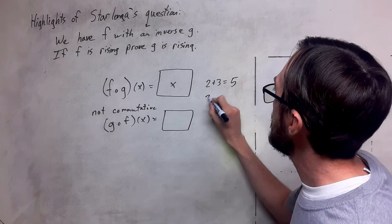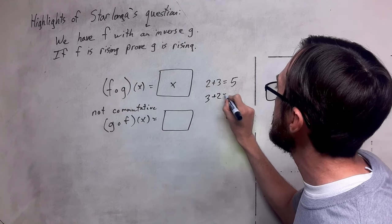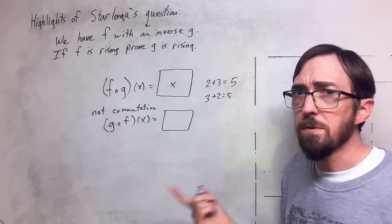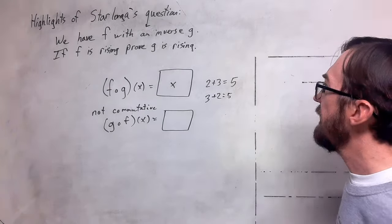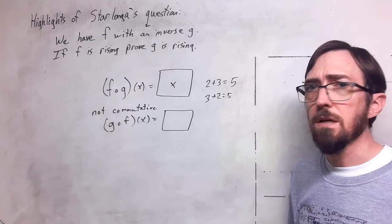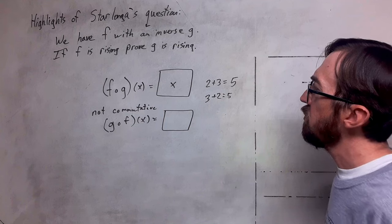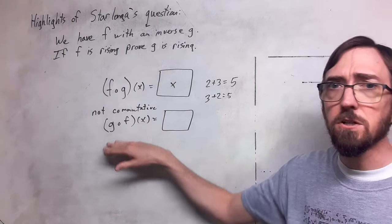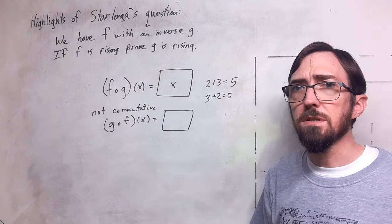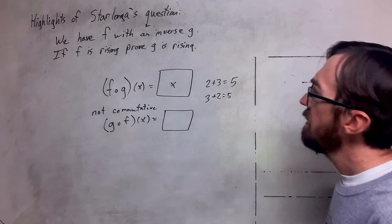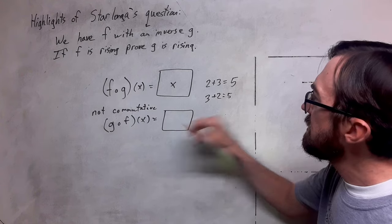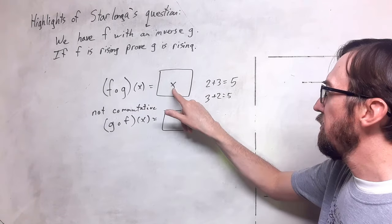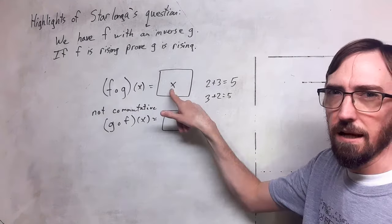We are very comfortable with commutativity because this happens for us many times. 2 plus 3 is 5, and also 3 plus 2 is 5. This is something that we've probably had since first grade, and we are very comfortable with commutativity. However, with the composition of functions, this is not a commutative operation. So we don't really know what goes in the box here, even if we know that this result is x.